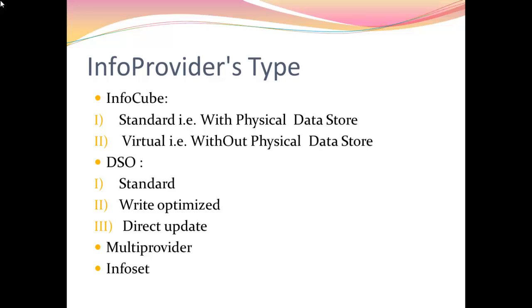Virtual type of InfoCube is further subdivided into three types. It is based on DTP from direct access when we are remotely accessing the data from SAP or other flat file as a source system. Second is based on BAPI - business application programming interface - used when we remotely access data from a non SAP source system. The last one is based on function module, a user defined function module as a data source.